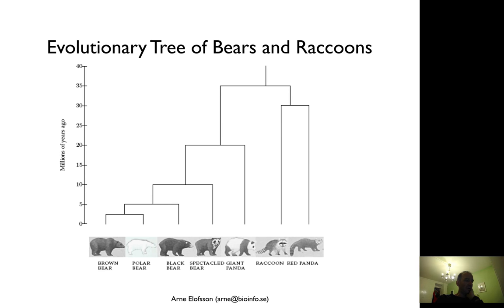As you can see in the panda phylogenetic tree, brown bears and polar bears are quite recently separated — by a few million years. The black bear is maybe separated by five million years. There are spectacled bears, perhaps separated by ten million years. The giant panda is maybe twenty million years diverged, while raccoons were separated at least thirty-five million years ago. This is the type of information you can get from sequencing even a single gene.